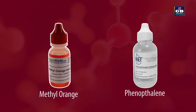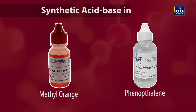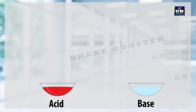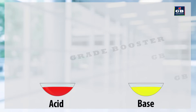Methyl orange and phenolphthalein are synthetic acid-base indicators. When methyl orange is added to an acid, it turns to red color. If it is added to a base, its color changes to yellow.